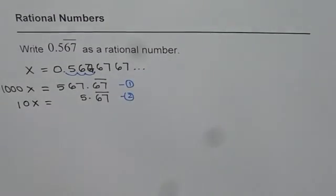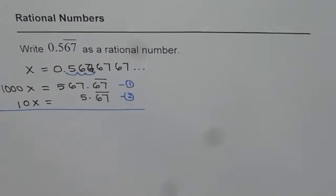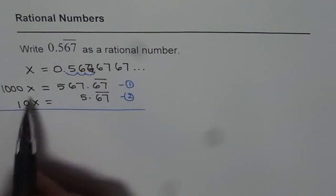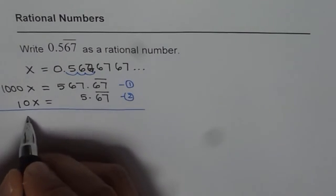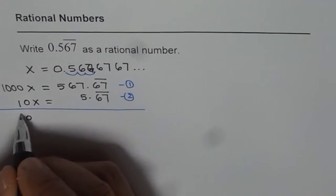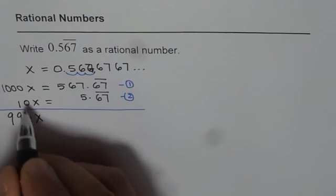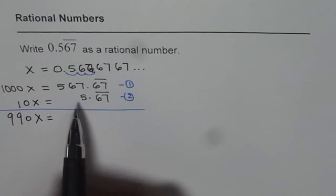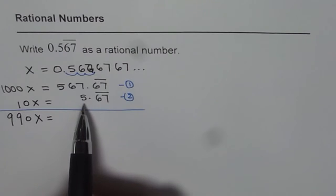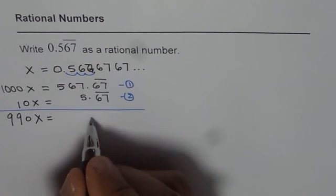Now if I take away equation 2 from 1, what do I get? So I get 1000x minus 10x. So 0 take away 0 is 0. Then from 10, if I take away 1, I get 9. Here I have 9. So 990x is on the left side, is equal to 567.67 recurring, take away 5.67 recurring. So after decimal, I get 0.